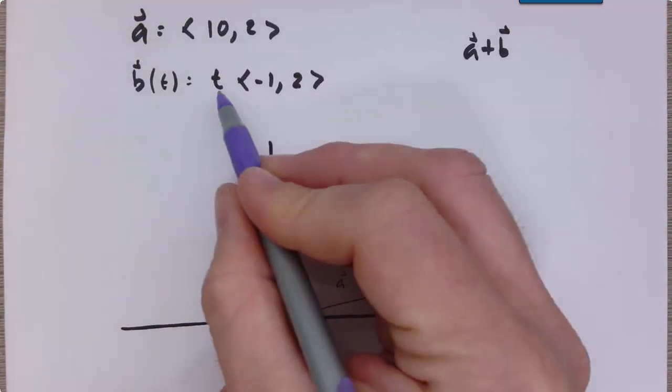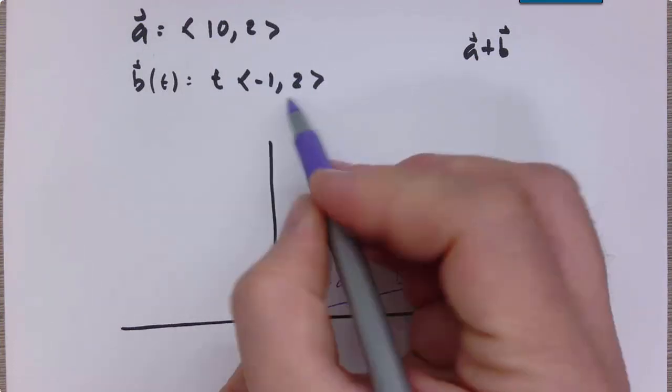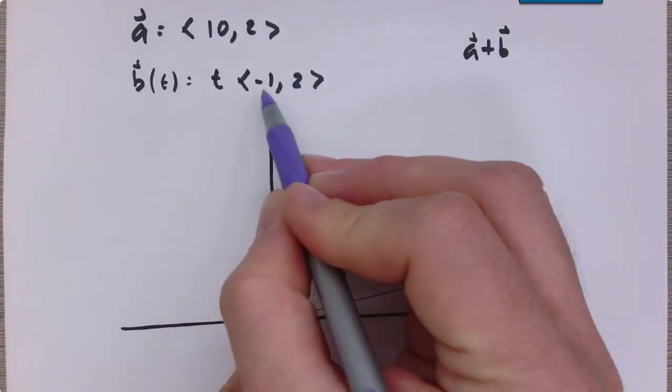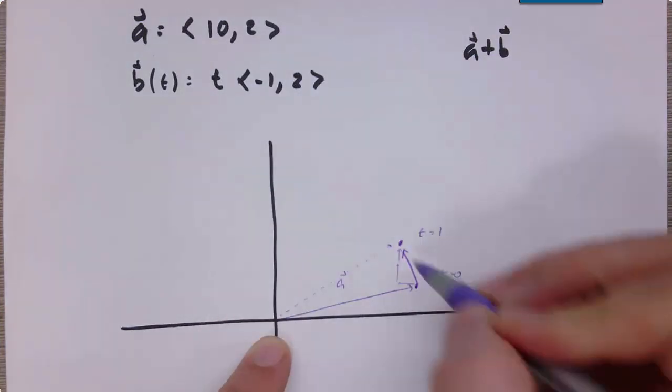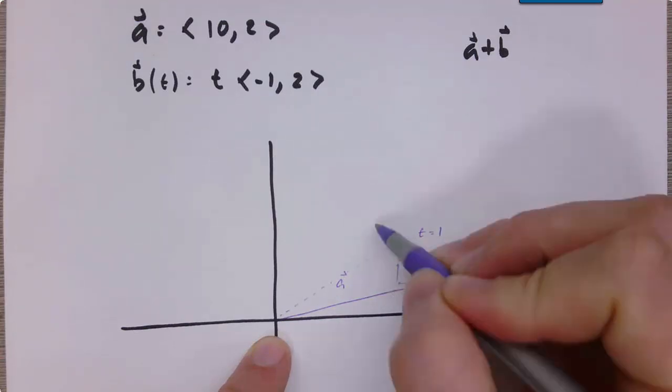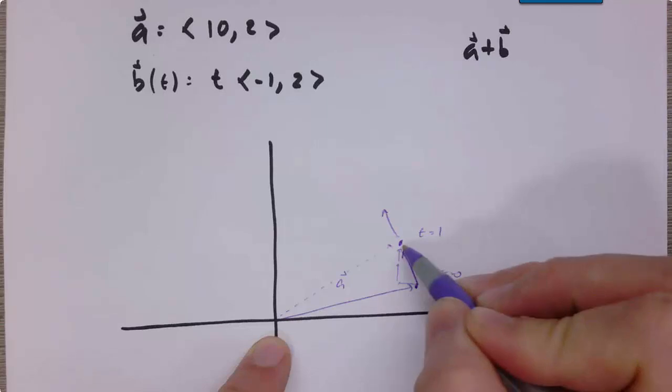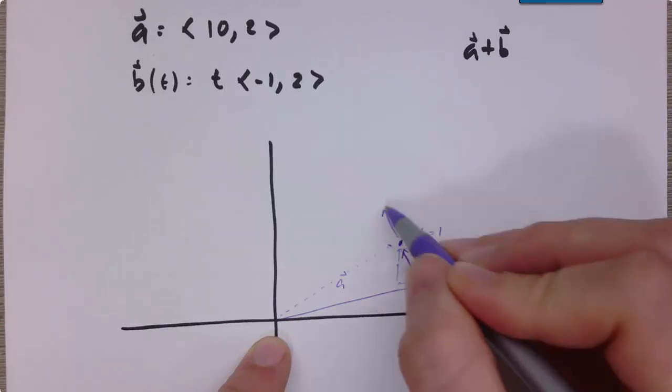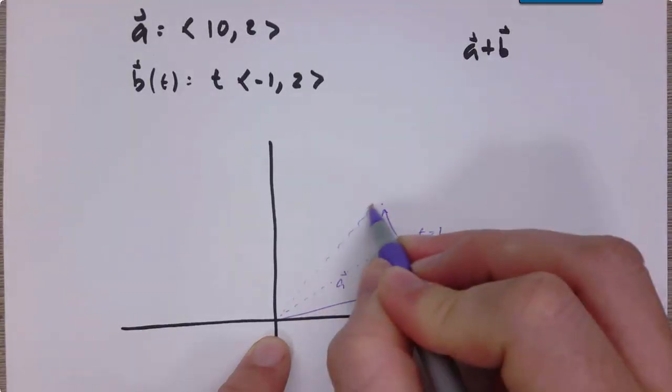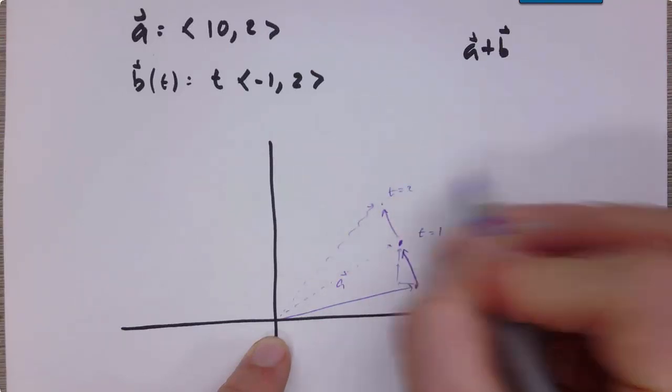At time 2, I'm scaling this vector to be length 2. So now I'm going left by 2 and up by 4. So here, left by 2, up by, well, let's just make a second one, actually. So here's a length 1b, here's a length 2b. And the resultant vector would look like this. So here's t equals 2.